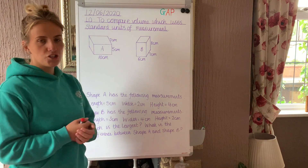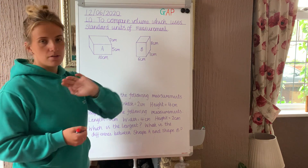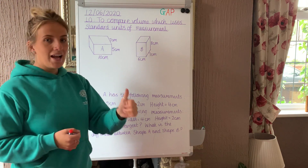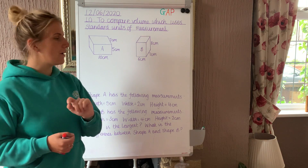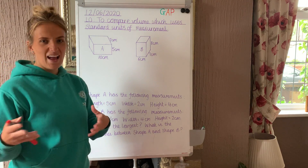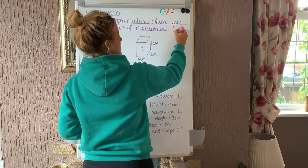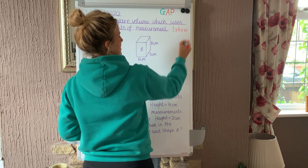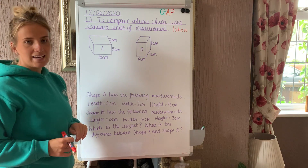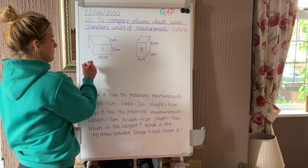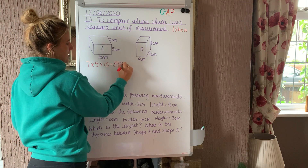So I've got two cuboids on the board — shape A and shape B. Shape A has got certain measurements and shape B has got these measurements. There are two things we need to do today: compare them and calculate the difference between them. First, in order to compare the volume, we need to calculate the volume. The volume is length times height times width, or length times width times height, whichever. So I need to multiply these — 7 times 5 is 35, times by 10 is 350 centimetres cubed.